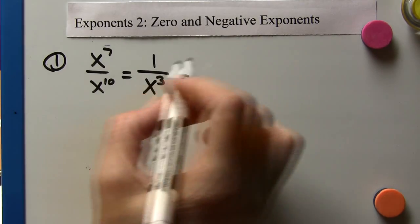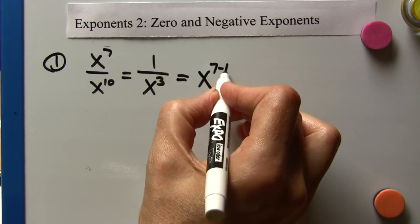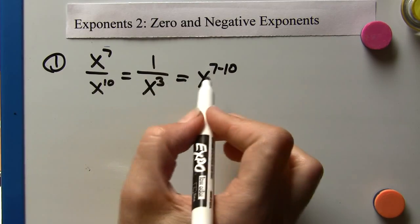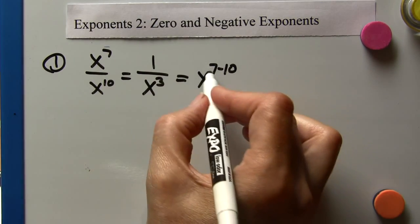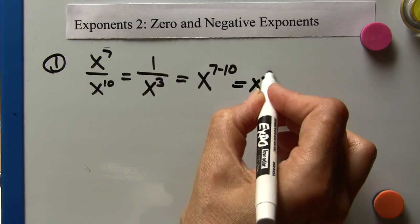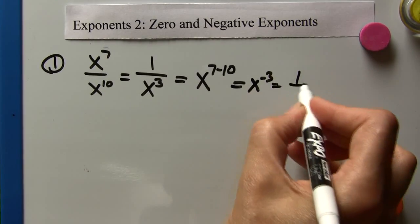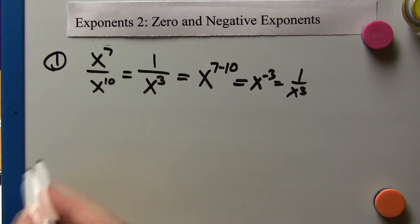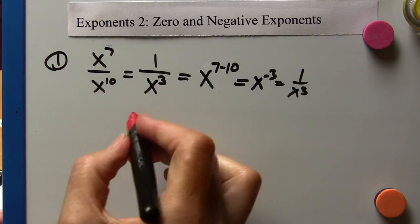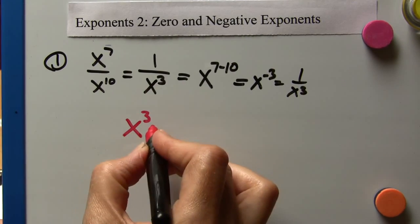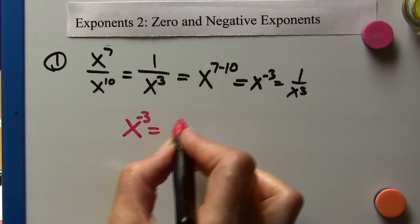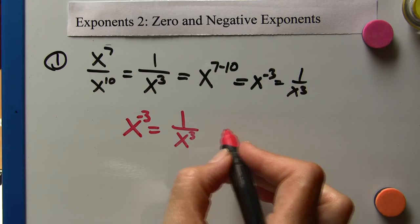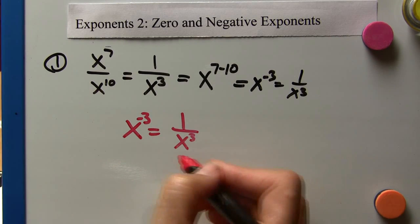We could also do this another way: it's x to the seven minus ten. You take the exponent in the numerator and subtract from it the exponent in the denominator. So seven minus ten gives x to the negative three, which equals one over x cubed. So x to the negative three equals one over x cubed, and one over x cubed equals x to the negative three. It works both ways.